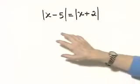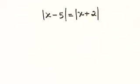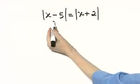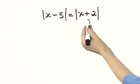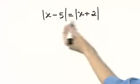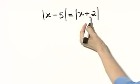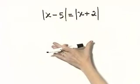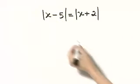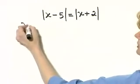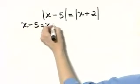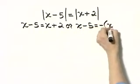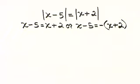Notice we have an absolute value equation — an absolute value equal to an absolute value. The only way this can happen is if x minus 5 equals x plus 2, or if those two expressions are opposites of each other. If they're equal, their absolute values are equal; if they're opposites, their absolute values are still equal. So either x minus 5 must equal x plus 2, or x minus 5 must equal the opposite of x plus 2.